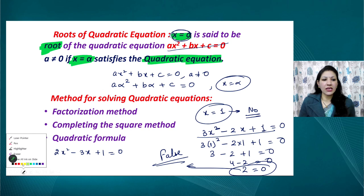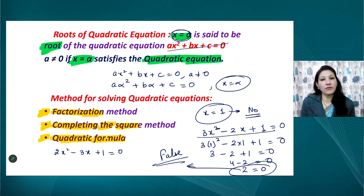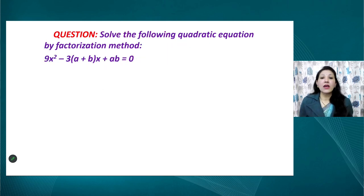To find the roots or zeros of a quadratic equation, there are three methods we will discuss: the first is the factorization method, the second is completing the square method, and the third is the quadratic formula. When we derive the completing the square method, we will see how the quadratic formula is developed from it.